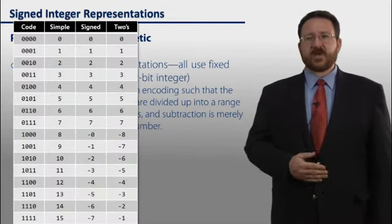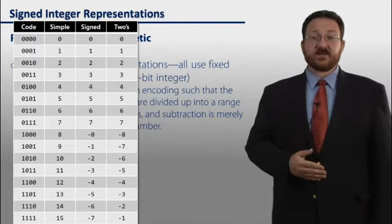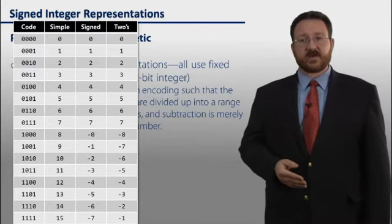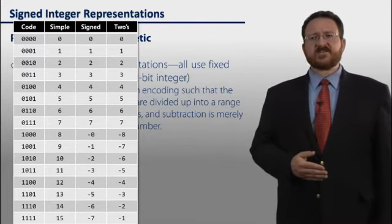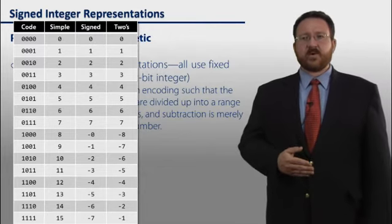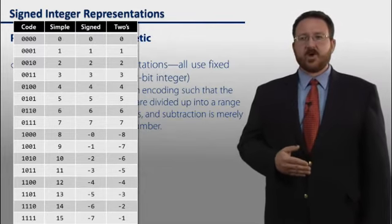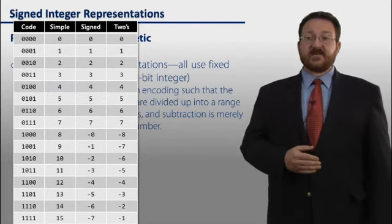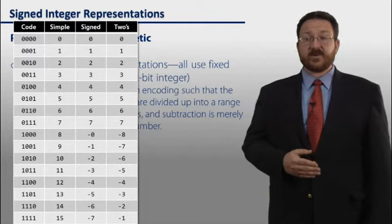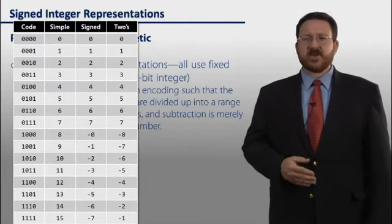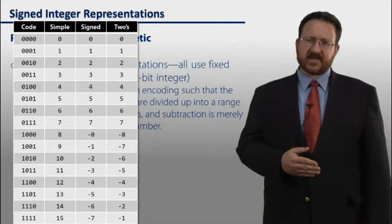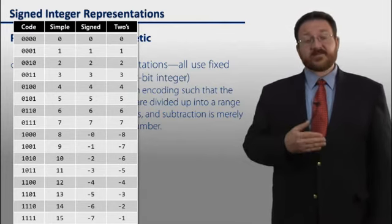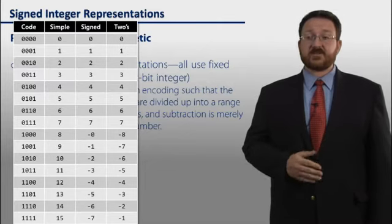So here's a table of codes on the left. Each of these codes is then interpreted as either simple binary, sign magnitude, or 2's complement in the remaining columns. Notice that all of these are the same through the number 7. But when we get to the representation of 100, what we find in the simple representation is that this is the number 8. In the sign magnitude, this is negative 0, but in 2's complement it's negative 8. Notice in 2's complement that there is no representation of negative 0, so it fixes that problem. In addition to that, it simplifies the hardware by unifying addition and subtraction.